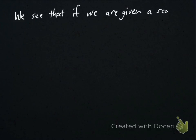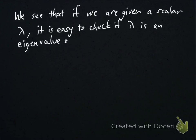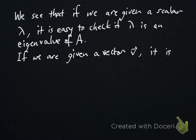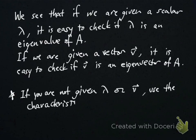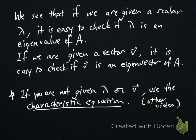So one of the things that we've seen here is that if we're given an actual scalar lambda, it's easy to check if lambda is an eigenvalue of A. And also if we're given an actual vector V, it's easy to check if V is an eigenvector for A. Now if you're not given either one and you're just asked to find all the eigenvalues and eigenvectors of a given matrix, you have to do more work. And so this is the study of the characteristic equation. I'll make another video for that and link it here.